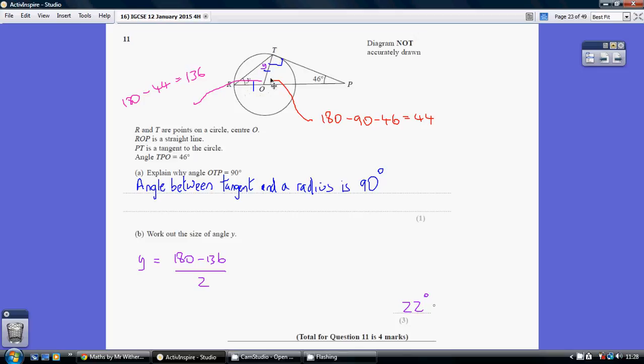It's an isosceles triangle, so the base angle, so this angle here which is Y, and also this angle up here, is also Y. So the three angles in this triangle add up to 180.